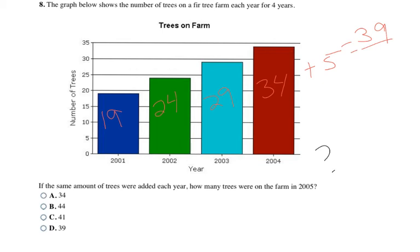So that means the next number of trees for 2005 is going to be about 39, which is choice D.